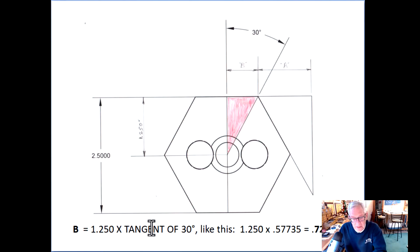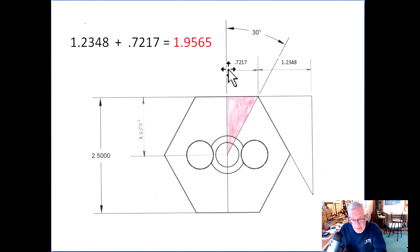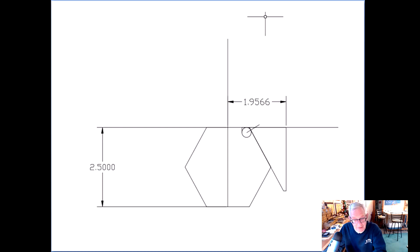Inch and a quarter times tangent of 30, like this: inch and a quarter times that again, that point five seven seven three five, gives us a B dimension of point seven two one seven from here to here. Now we solved for A and we've solved for B using our trig book. There's the numbers we just solved together and it comes up to the number we originally had when I did it in AutoCAD. I'm a tenth off due to rounding.